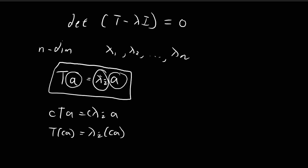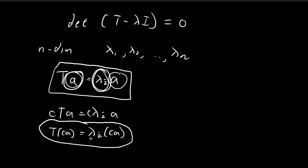For whatever eigenvector you find corresponding to this eigenvalue, you can always scale that vector with whatever constant you want and it will still be a valid eigenvector. So the eigenvectors themselves are not unique — this is something you should take note of.